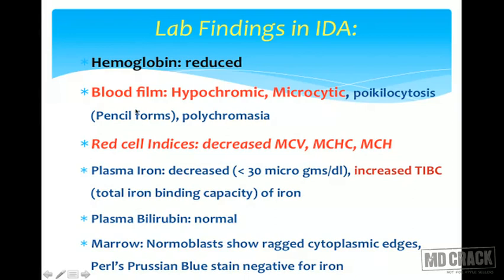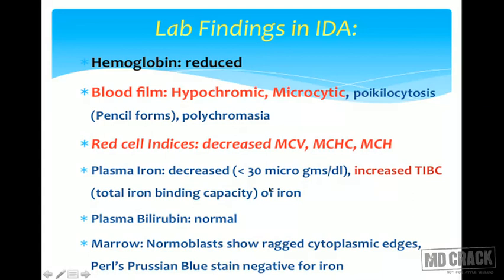On blood film, microcytic hypochromic anemia is seen — though you must consider other causes for this pattern. Poikilocytes, mainly pencil forms, are present. Polychromatophilic RBCs appear once treatment begins. Red cell indices — MCV, MCHC, and MCH — are all reduced. Plasma/serum iron will be reduced, less than 30 micrograms per deciliter in severe cases (normal 70–120). TIBC is the only parameter raised in iron deficiency anemia.